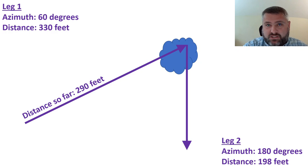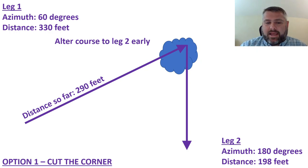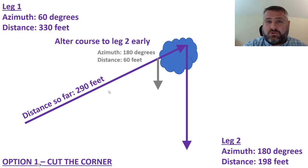You need to know the distance you've gone thus far. You need to write that down so you don't lose track of it. In this example they've gone 290 feet and this obstacle is just impacting the final 40 feet of this leg. In this first example, cut the corner. Basically you're going to switch on to this second leg where they're heading due south early. You're not going to complete the full first leg. You're going to switch on to the second leg early.